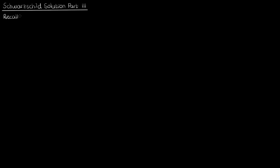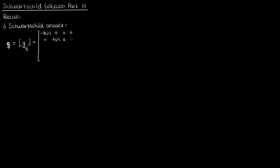Let's begin by recalling four things. The first is our Schwarzschild ansatz — our educated guess for the metric tensor solution to the Einstein field equations corresponding to a static, spherically symmetric mass. Note that B and A are exclusively functions of the radial coordinate r.